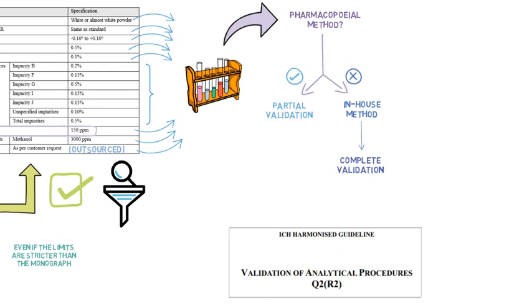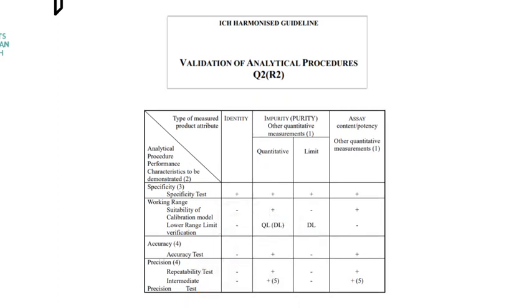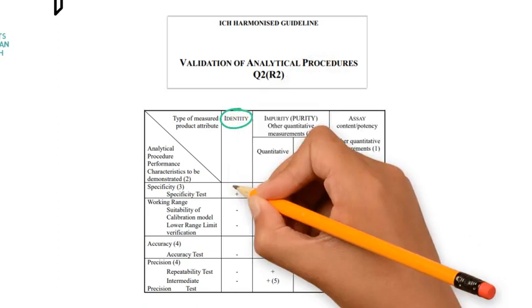This guideline explains which parameters need to be part of the validation, depending on the purpose of the method. For example, identification tests only need to demonstrate specificity.